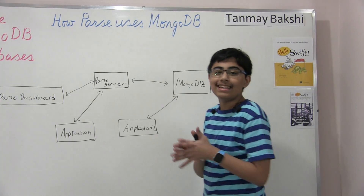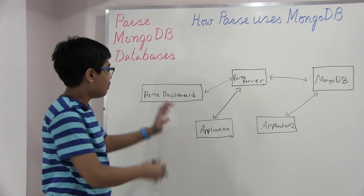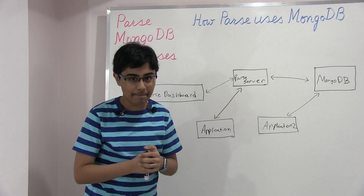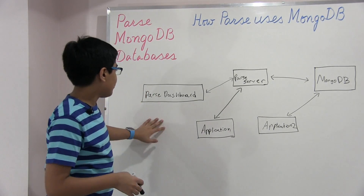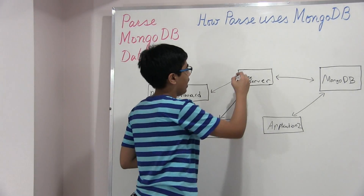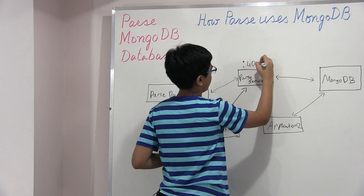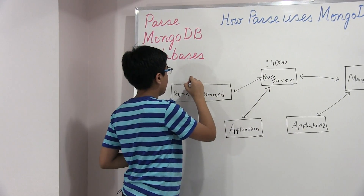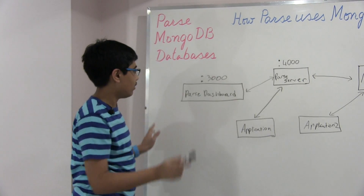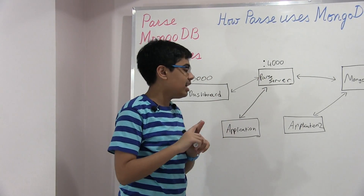That is exactly how this works, and that is what the actual relationship is between the Parse dashboard and MongoDB, and of course the Parse server and MongoDB. One more thing to note: these two are basically server-side software, so they have to run on ports. For example, one might run at port 4000 and the other at maybe 3000 — some sort of port — and the rest will be able to communicate through that web interface and web API.